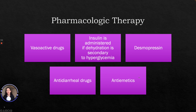Pharmacological therapy can be used to reverse hypovolemic shock using vasoactive drugs that prevent cardiovascular failure. We can use insulin if dehydration is secondary to hyperglycemia, desmopressin for diabetes insipidus, antidiarrheal drugs if dehydration is due to diarrhea, and antiemetics if the cause is vomiting.